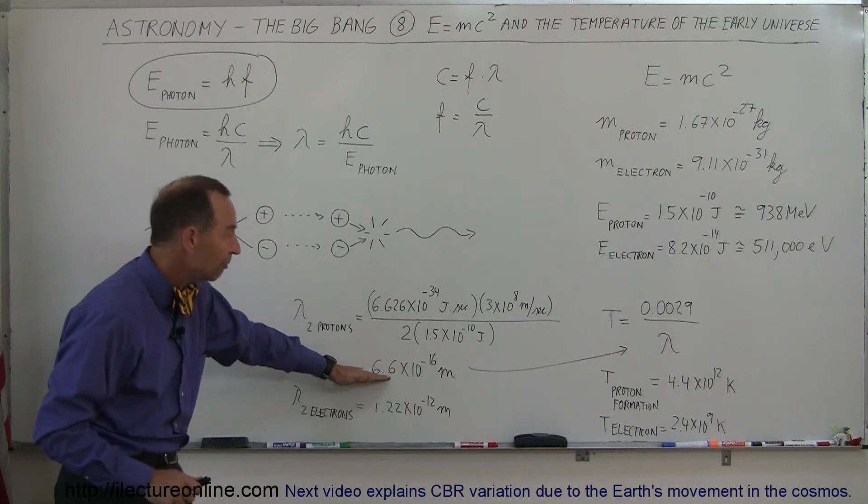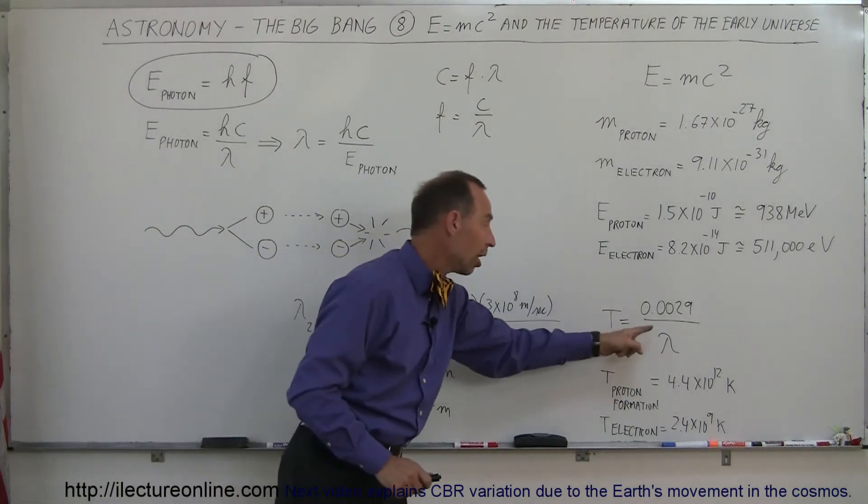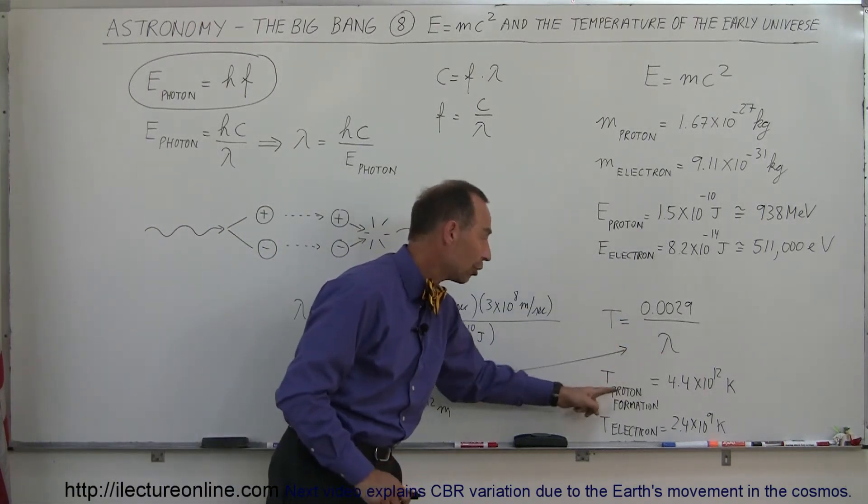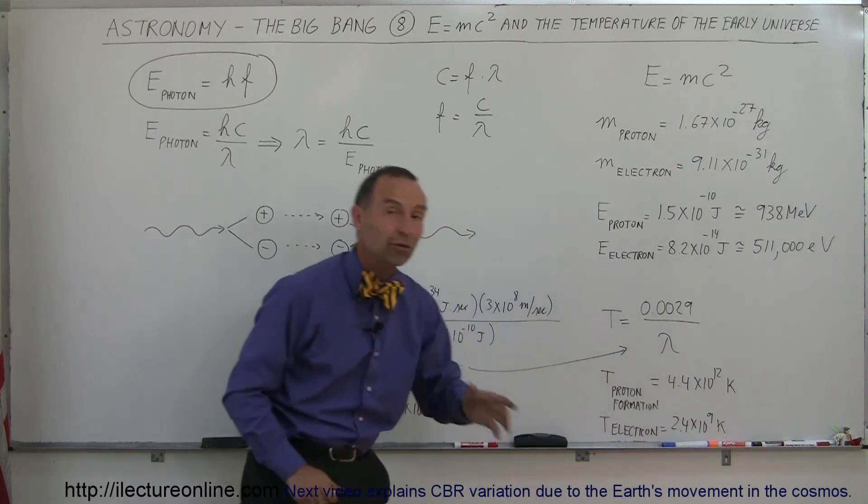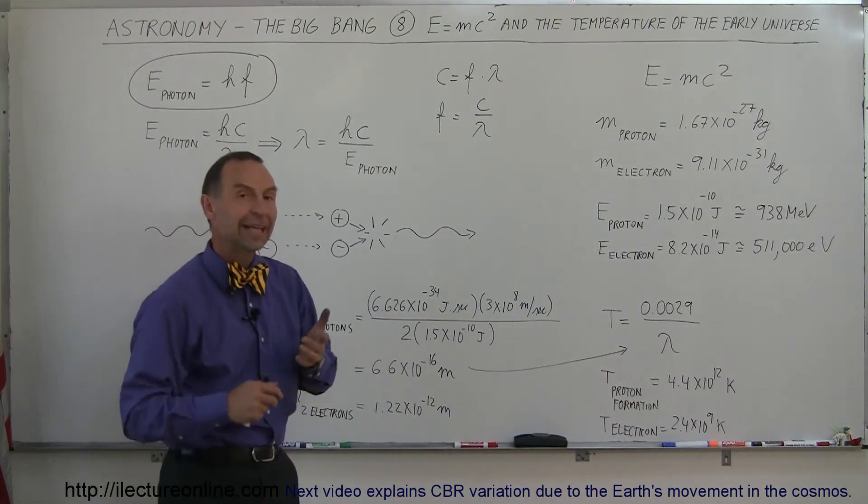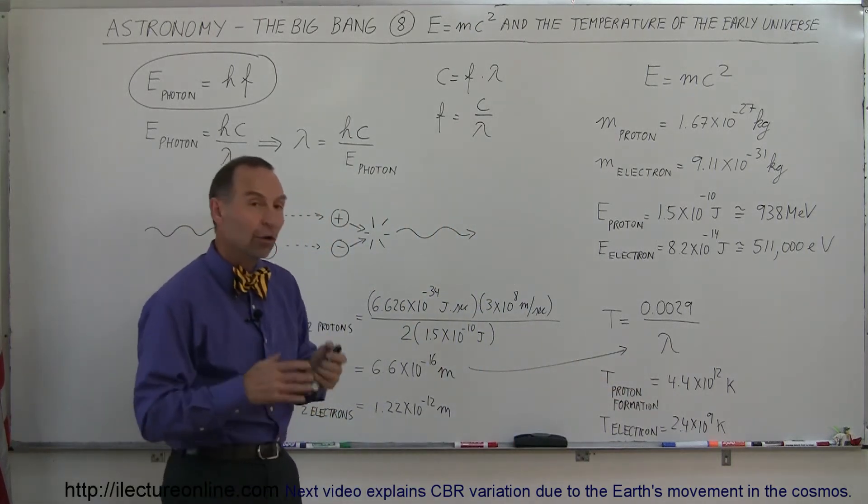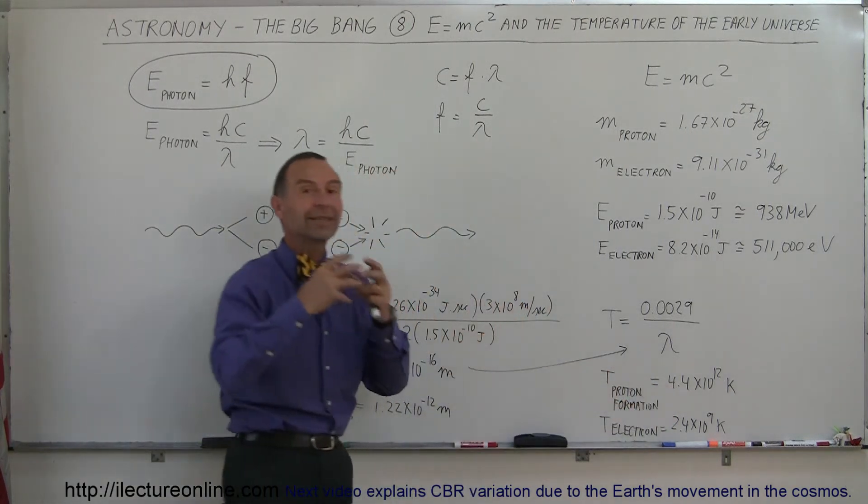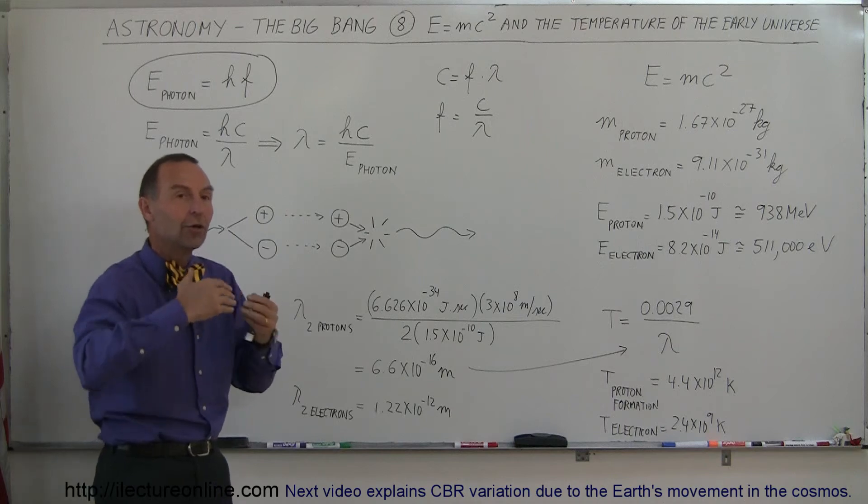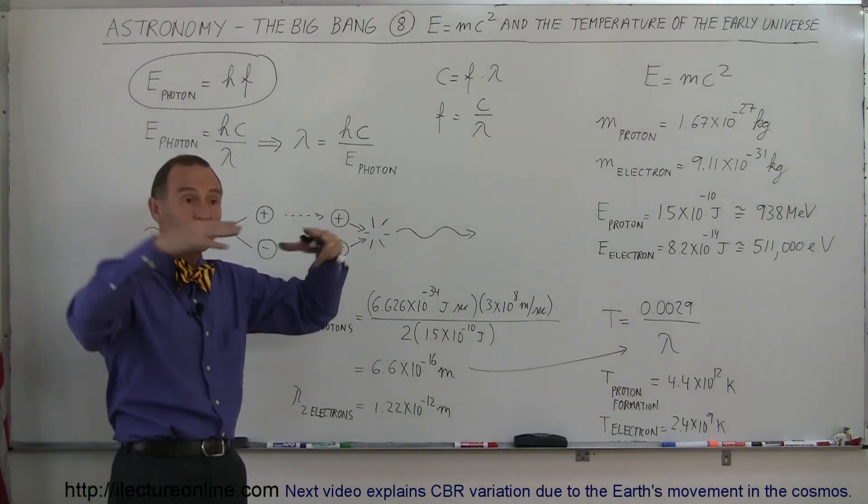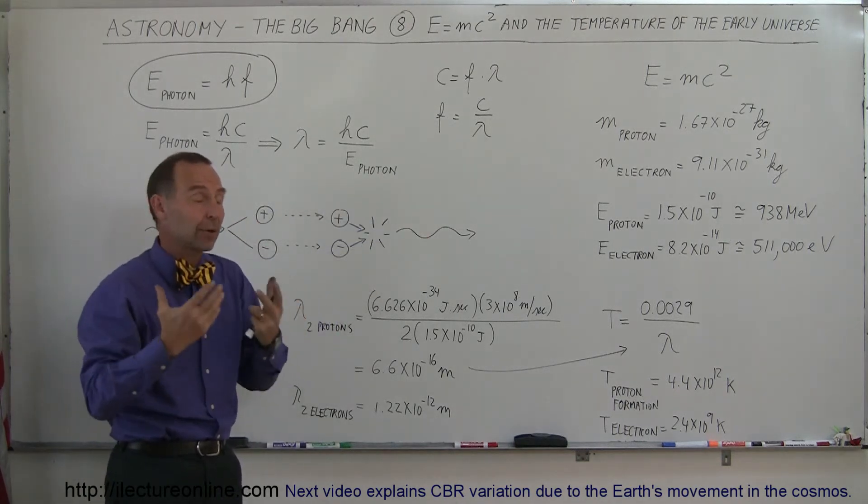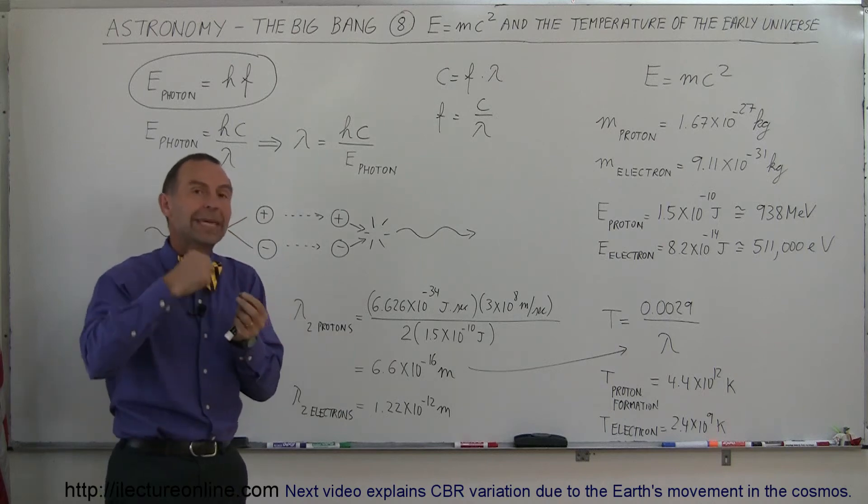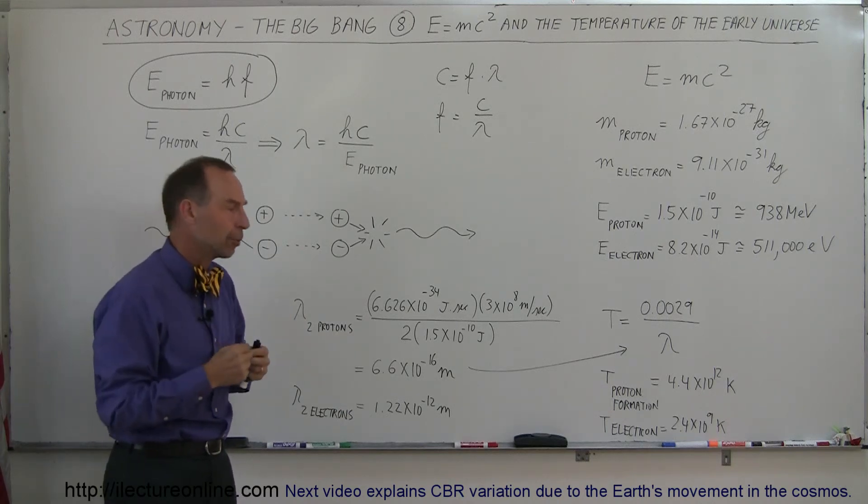If we then take that wavelength and put it into Wien's Law, that equates to a temperature of 4.4 times 10 to the 12 Kelvin, that is trillions of Kelvin. So the universe had to be at least 4.4 trillion Kelvin degrees hot for the energy or the radiation that we currently are seeing, the cosmic background radiation, for that radiation to be capable of making protons and anti-protons.